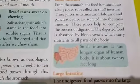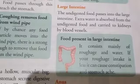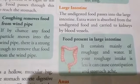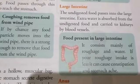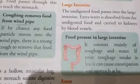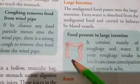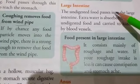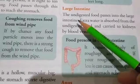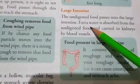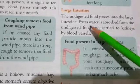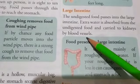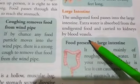Next one is the large intestine. The function of the large intestine is to absorb water and salts from the food that we eat. The large intestine is about 1.5 meters long. The undigested food passes from the small intestine into the large intestine, and the extra water is absorbed from the undigested food and then carried to the kidneys by the blood vessels.